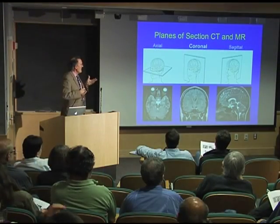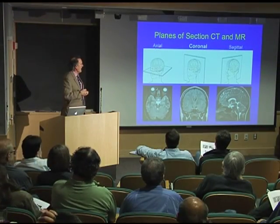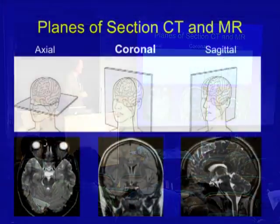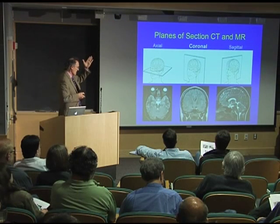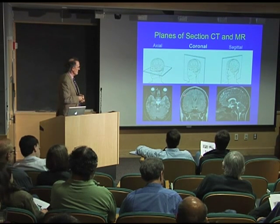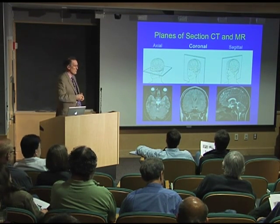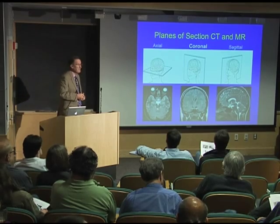You might hear the words axial, coronal, and sagittal. Here's a little cartoon to remind us: axial is cutting through like a slice of bread along the plane of the floor. Coronal would be perpendicular down the long axis of the body, and sagittal would be cutting along the midline of the body. Here you have a sagittal, coronal, and axial view of the brain done with MR.